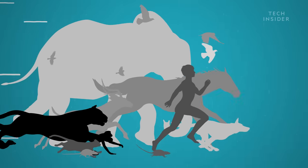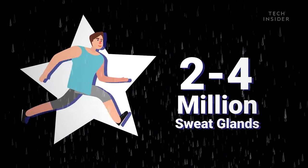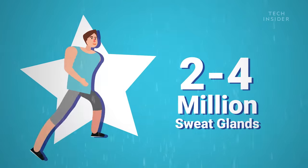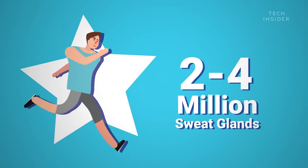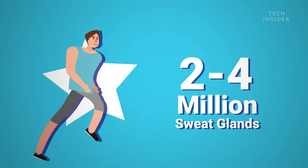So what makes humans such endurance-running superstars? The secret weapon is our sweat. We have two to four million sweat glands all over our body, which means we can run and cool ourselves at the same time. Having no fur is also a huge plus.